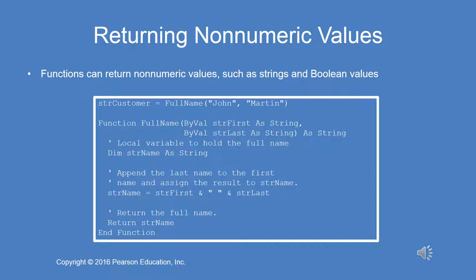Here we have an example of a function that returns a non-numeric value. You can return strings, boolean, or any data type. We have both the function call on the right-hand side of an assignment statement and the function definition. The function definition for full name has two by-value parameters which are strings. What this function does is concatenate those two strings and add a space between them. So you're passing 'John' and 'Martin' as the two arguments to full name, and it will concatenate those together with a space in the middle.